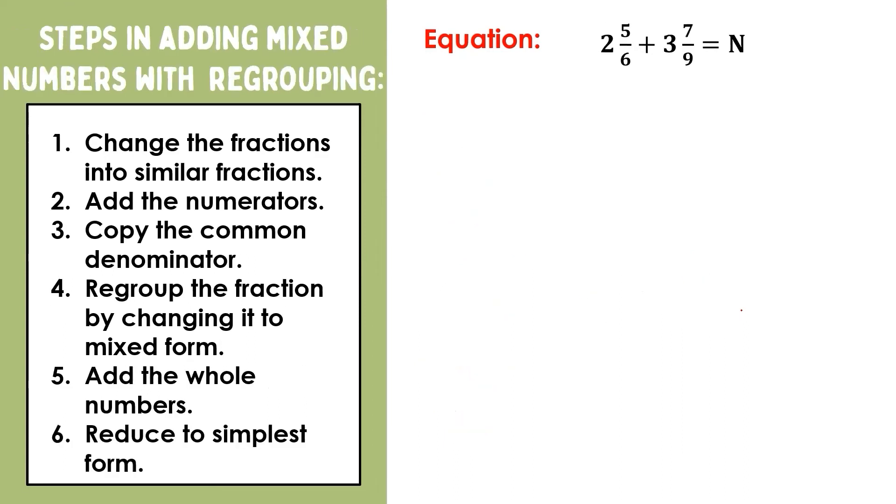For our last example, let's have two and five-sixths plus three and seven-ninths. First, let us set aside the whole numbers so we can change these fractions into similar fractions using the butterfly method. Nine times five is forty-five, six times seven is forty-two, and six times nine is fifty-four. So five-sixths and seven-ninths will now be forty-five over fifty-four and forty-two over fifty-four, respectively. Don't forget to bring back the whole numbers we set aside earlier. Now, we can start adding.